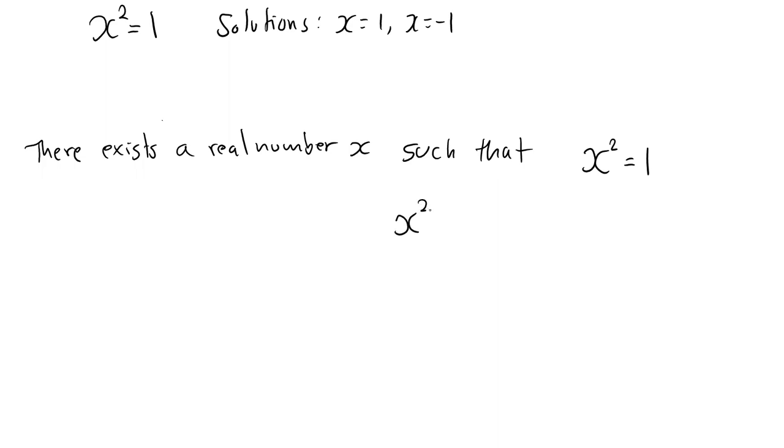A second way we can turn a predicate into a statement without replacing the free variable with a specific value is to prepend the sentence with, for every real number x. In this case, the predicate turns into the statement, for every real number x, x squared is equal to 1. This is now a false statement.